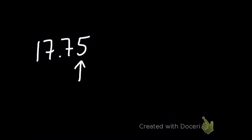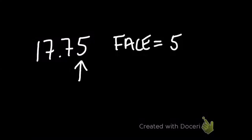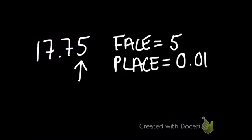Let's try a new number, this time a decimal: 17.75. The indicated digit this time is 5, so we want to find the total value of the 5 in that number. The face value in this case is 5. Then we look for its place value — the 5 sits in the hundredths place value, so 0.01 is the decimal equivalent.